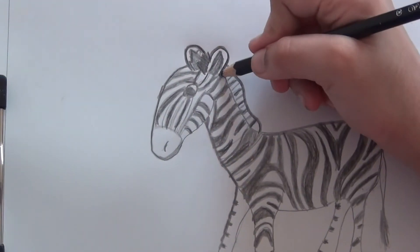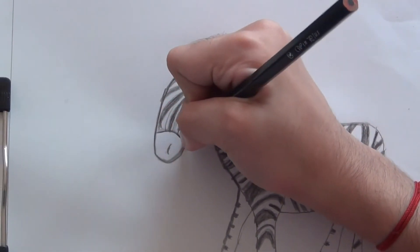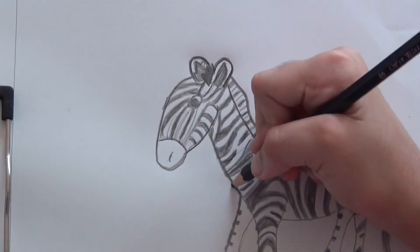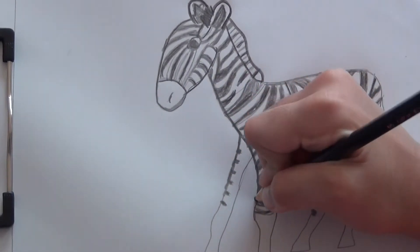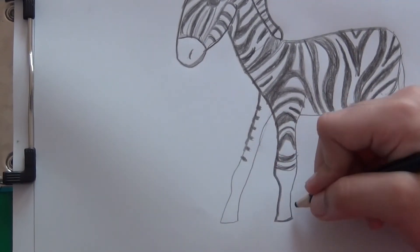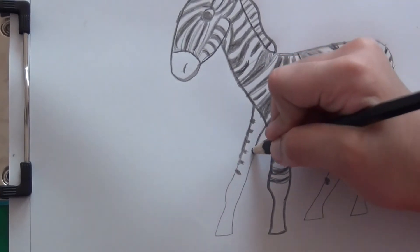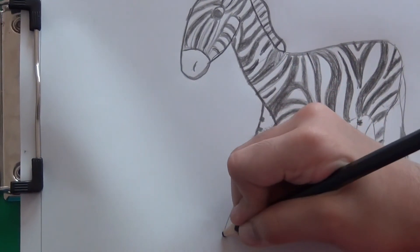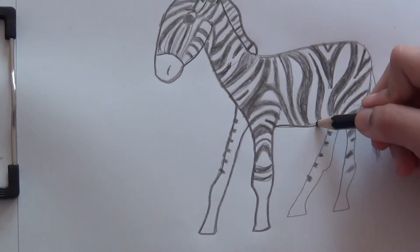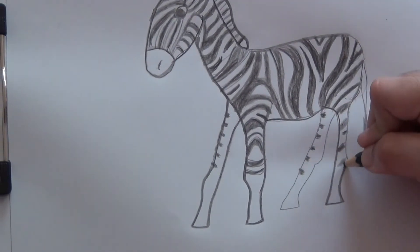Now I'm putting the outline for the zebra. Now I'm going to the back legs.